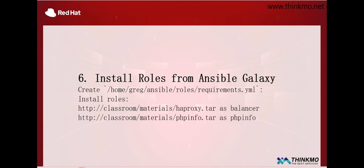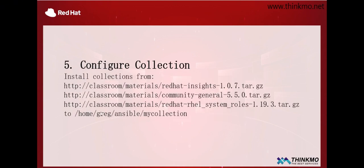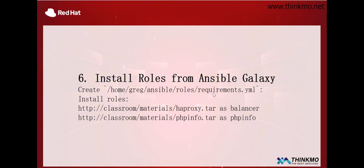First we need to create the requirements file. Pay attention to the fact that its path is different from the previous question. For question six, the path is under the rules directory. We need to create the requirements file under the rules directory — everyone should be careful not to make mistakes with the file path.